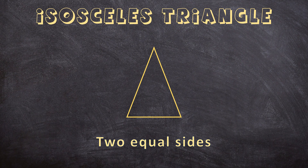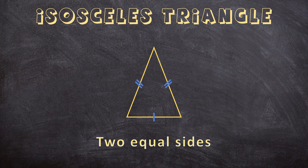Let's have another example. Let's say we have two sides of 20 cm and another side of 10 cm — so two sides are the same in length. Again, we can indicate that this is an isosceles triangle without using exact measurements. The two sides with the same symbol — two stripes — are the same in length, while the other side is not equal in length.